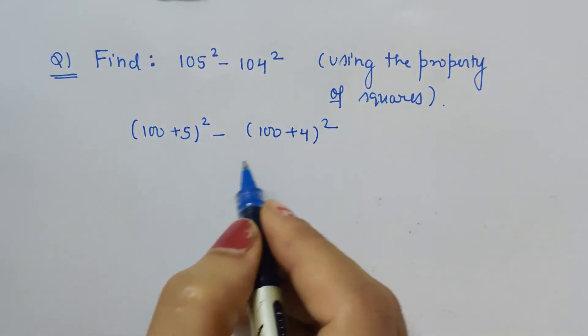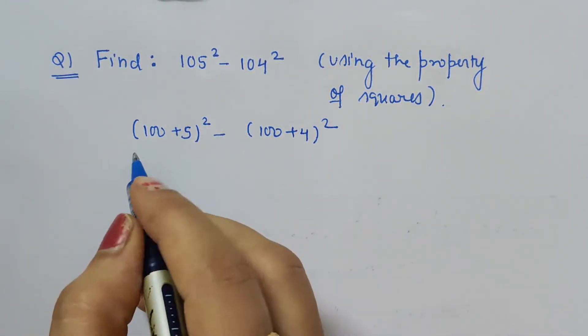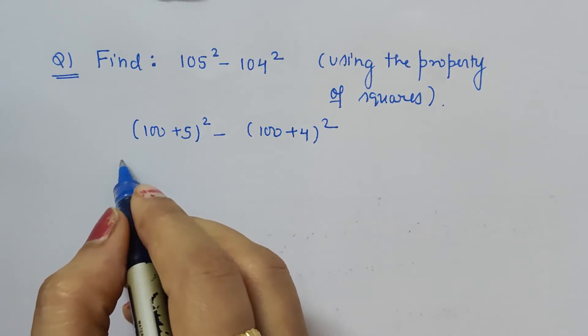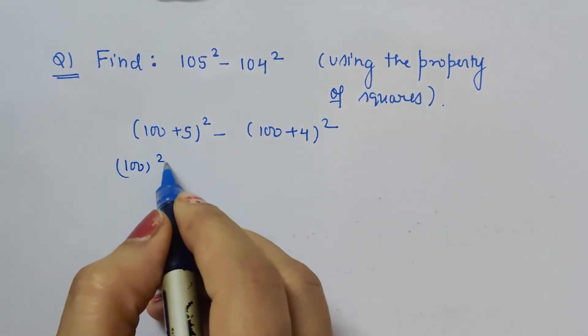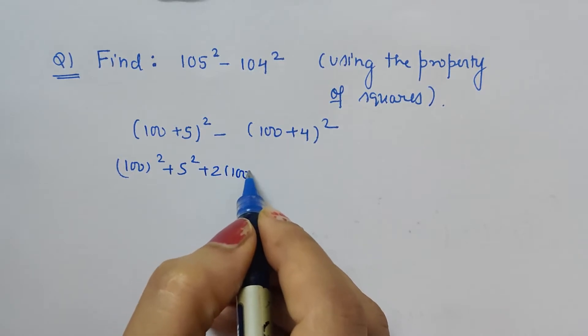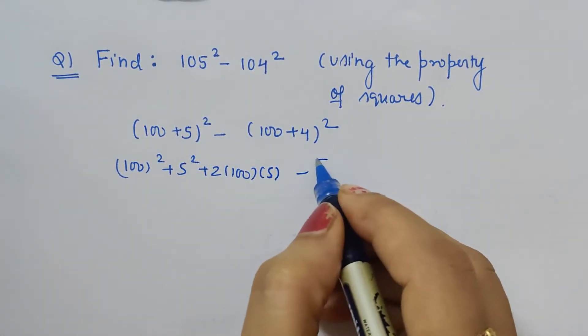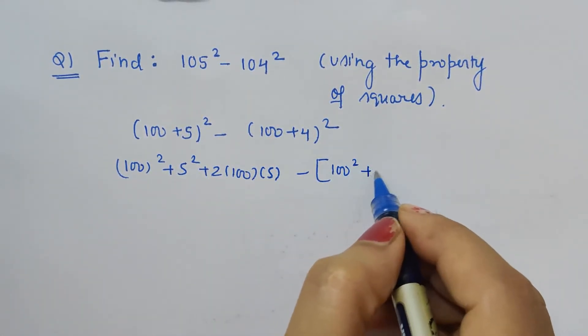Now (a + b)² can be expanded in that form, so it is a² + b² + 2ab, and then minus [a² + b² + 2ab] for the second term.